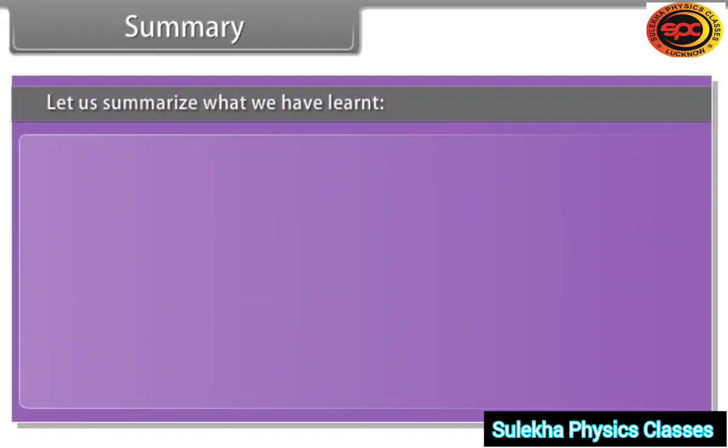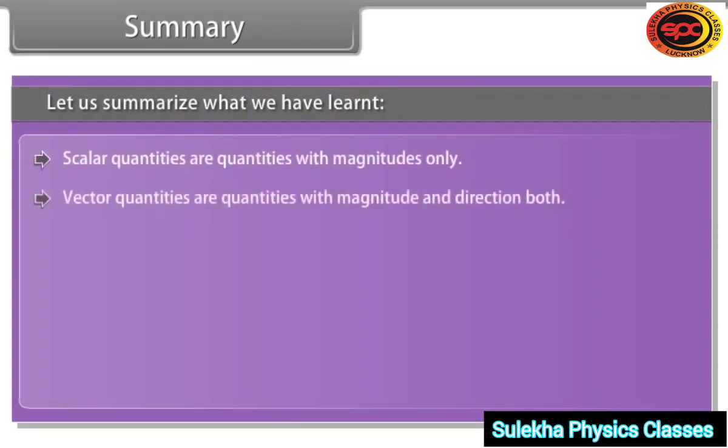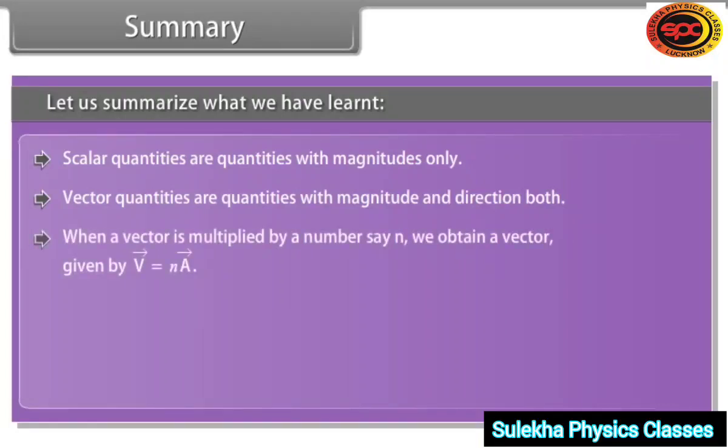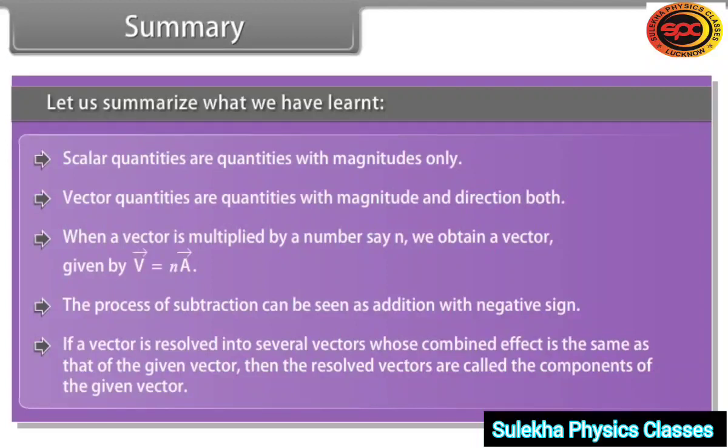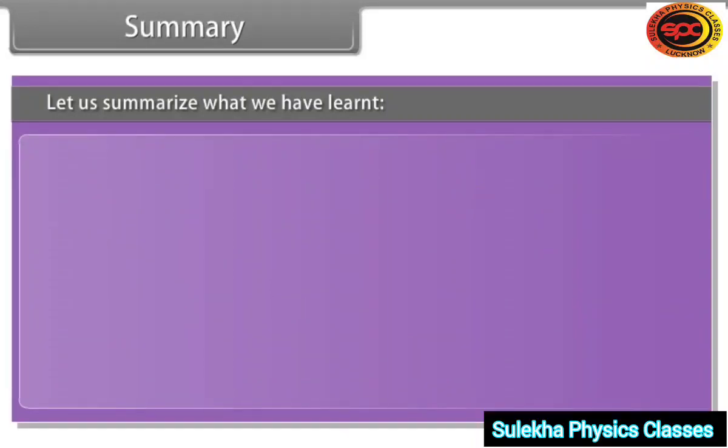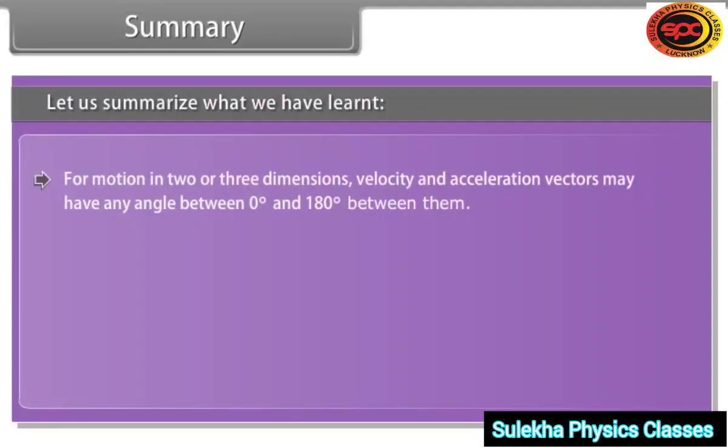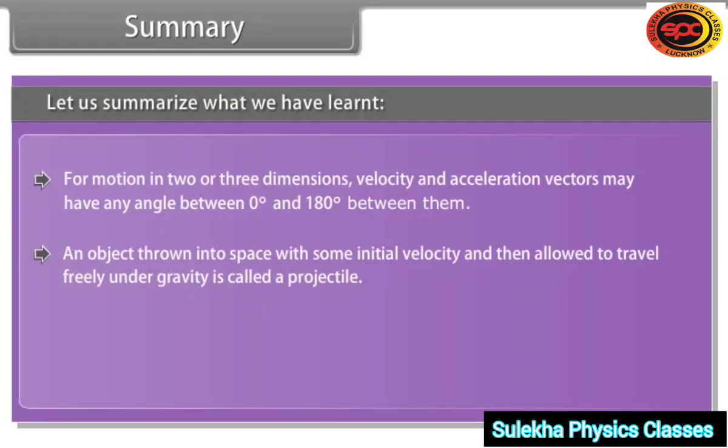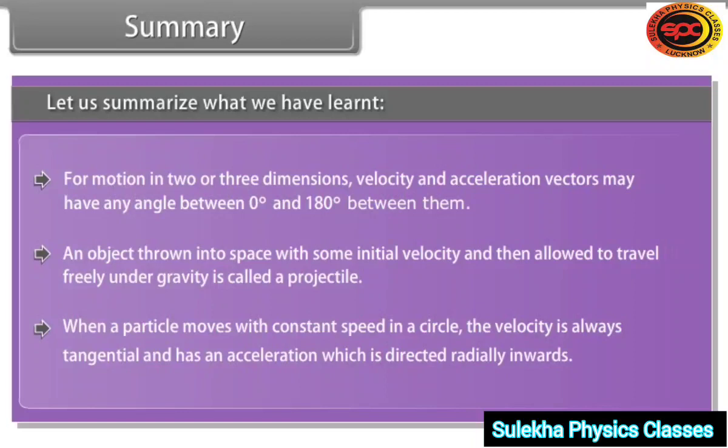Let us summarize what we have learned. Scalar quantities are quantities with magnitudes only. Vector quantities are quantities with magnitude and direction both. When a vector A is multiplied by a number say N, we obtain a vector V given by V = NA. The process of subtraction can be seen as addition with negative sign. If a vector is resolved into several vectors whose combined effect is same as that of the given vector, then the resolved vectors are called the components of the given vector. For motion in two or three dimensions, velocity and acceleration vectors may have angle between 0 degree and 180 degree between them. An object thrown into space with some initial velocity and then allowed to travel freely under gravity is called a projectile. When a particle moves with constant speed in a circle, the velocity is always tangential and has an acceleration which is directed radially inwards.